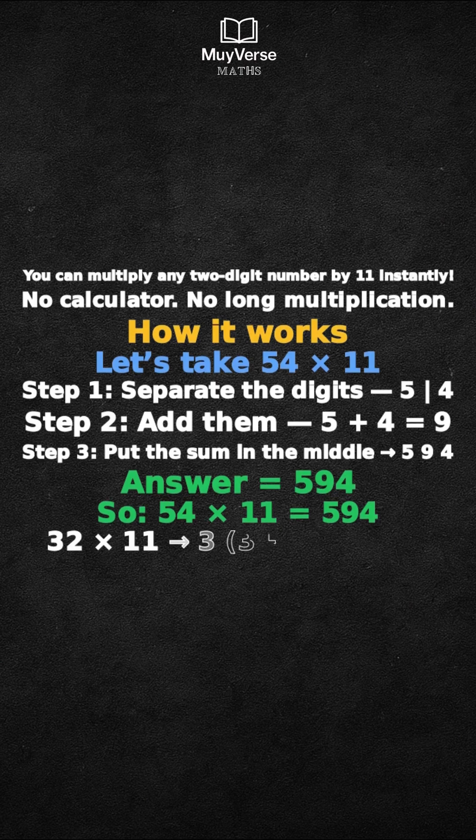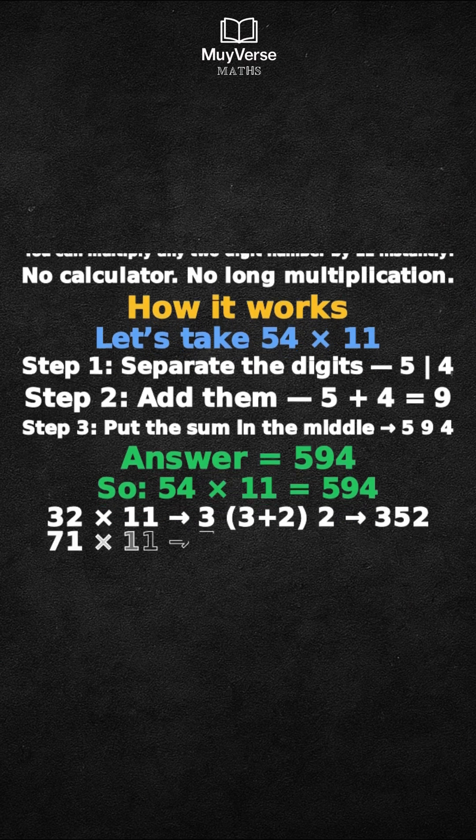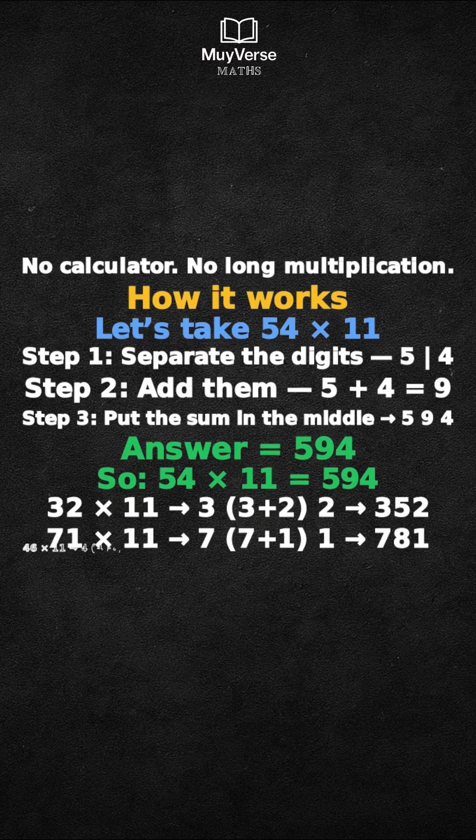More examples. 32 times 11 becomes 3, 3 plus 2, 2 equals 352.